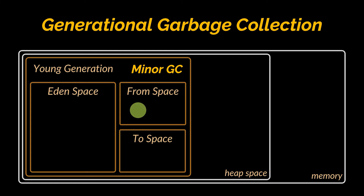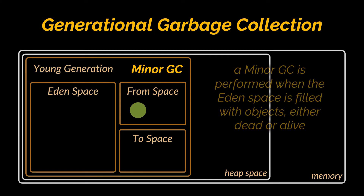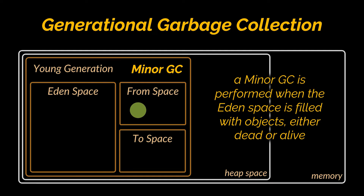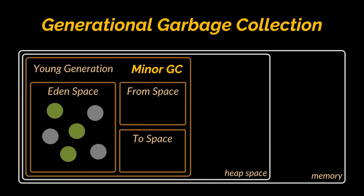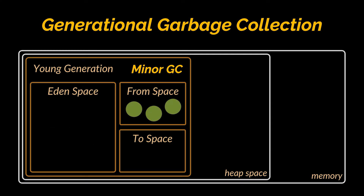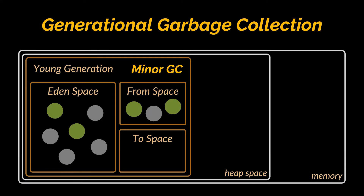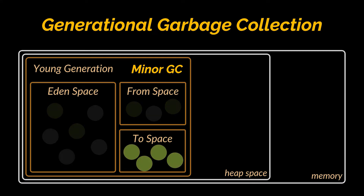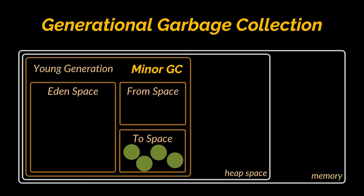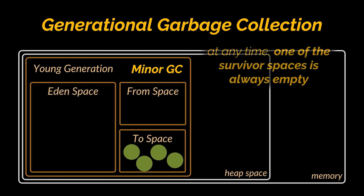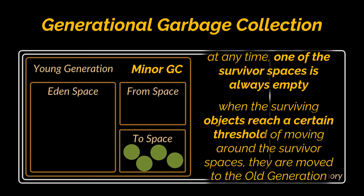If an object survives one GC cycle, it is moved to the survivor spaces. When objects are garbage collected from the young generation, it is a minor garbage collection event. A minor GC is performed when the Eden space is filled. Dead objects are deleted and all live objects are moved to one of the survivor spaces. For example: Eden fills with alive and dead objects, a minor GC occurs, dead objects are removed, alive objects move to the 'from' space, Eden and 'to' space are now empty. New objects are added to Eden; when minor GC occurs again, all live objects move to 'to' space. At any time, one survivor space is always empty.